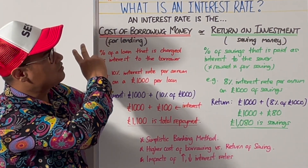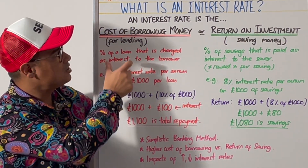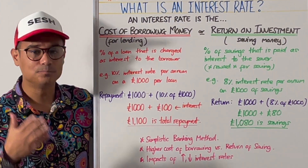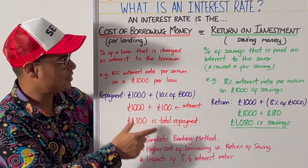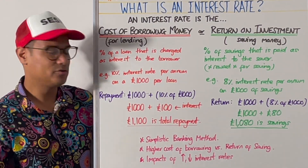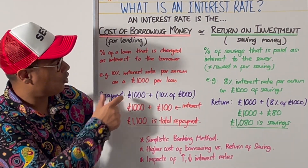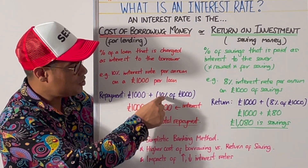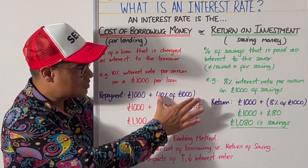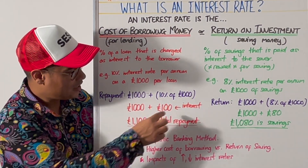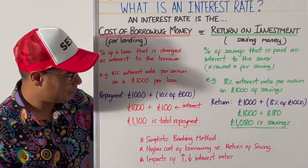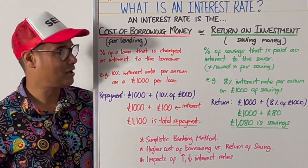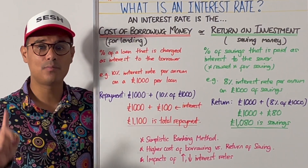An interest rate is the cost of borrowing money. For example, the percentage of a loan charged as interest to the borrower. If you're taking out a £1,000 loan at a 10% interest rate per annum, the repayment will be £1,000 plus 10% of £1,000, which is £100. So the total repayment on a £1,000 loan at 10% per annum is £1,100.